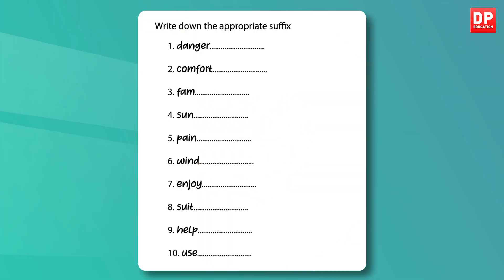Now that you have some understanding of suffixes, let's do some exercises so that you will be able to understand how and when to use suffixes. Write down the appropriate suffix for each of the following words: dangerous, comfortable, famous, sunny, painful, windy, enjoyable, suitable, helpful, useful.